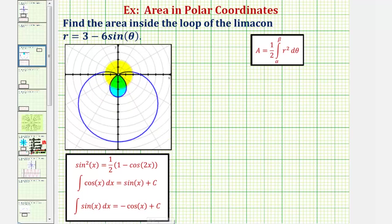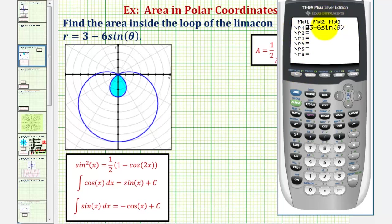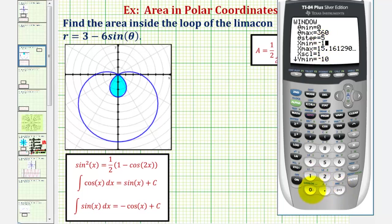We'll trace this inner loop using degrees, even though we have to use radians in our integral. Press the mode key and make sure the calculator is in degree mode and polar mode. Then press y-equals and enter the equation. Press the window key — because we're in degree mode, set theta from zero to 360, change the theta step to five degrees, and set x and y intervals from negative 10 to positive 10. Then press graph.